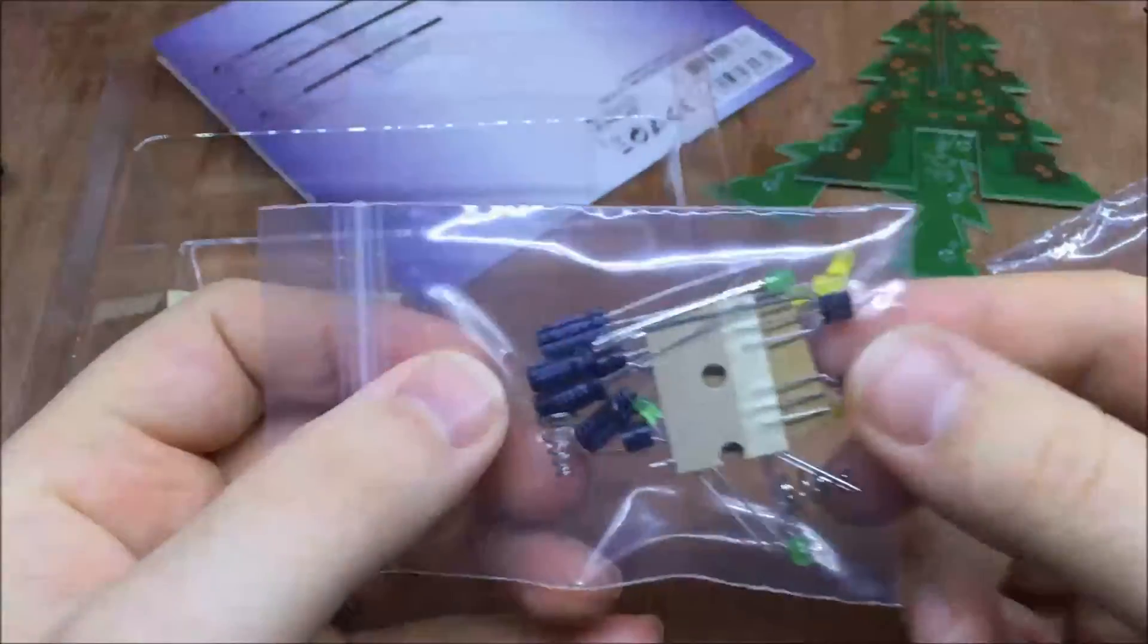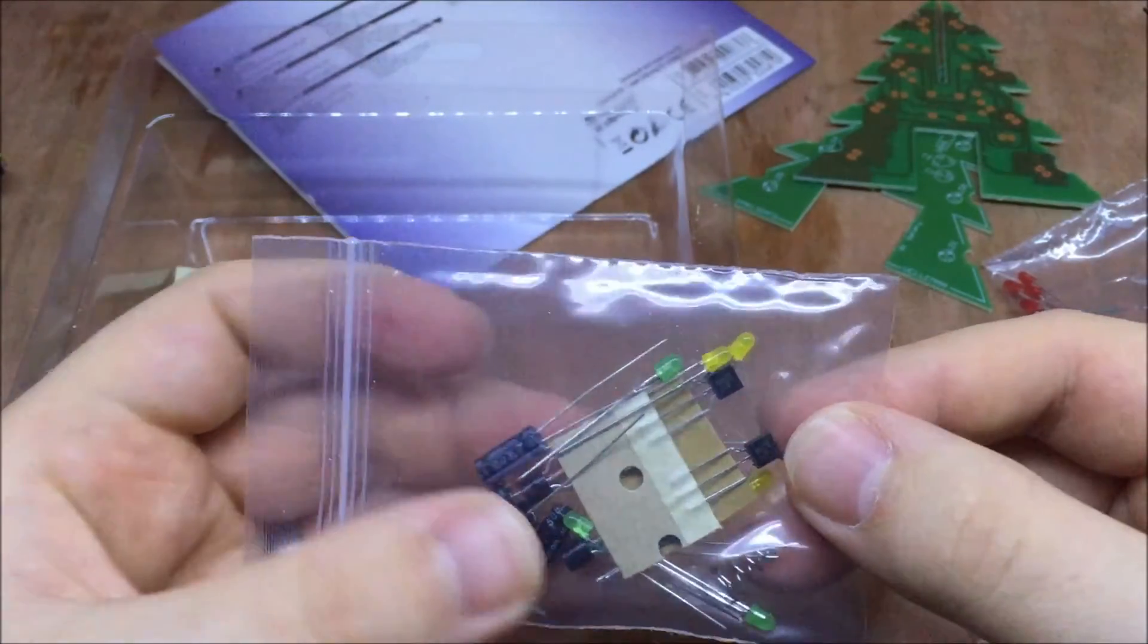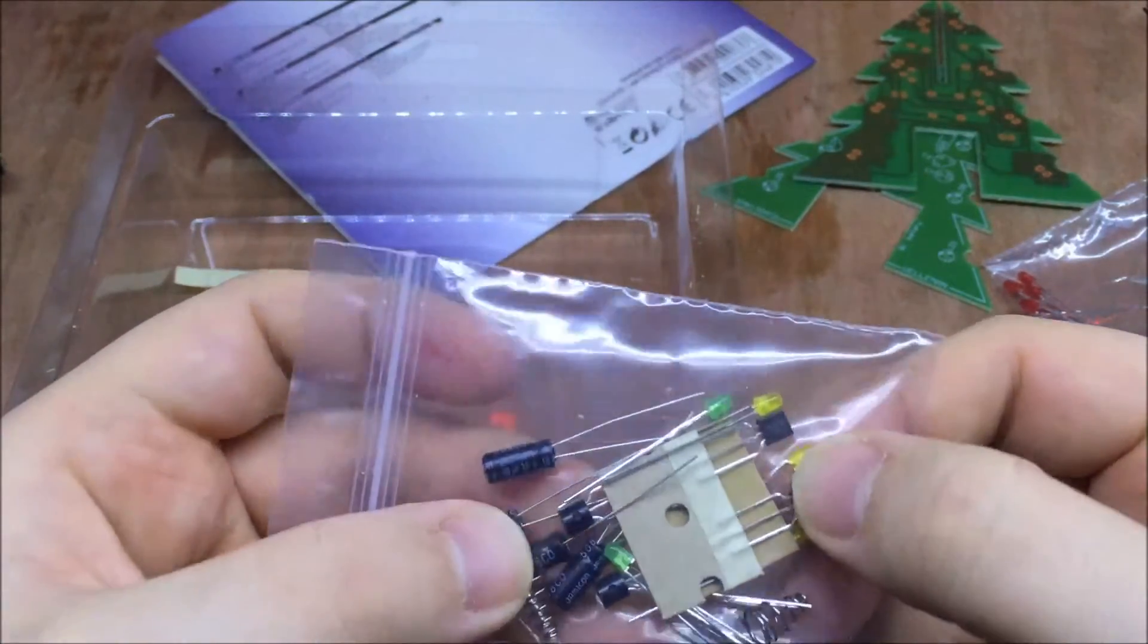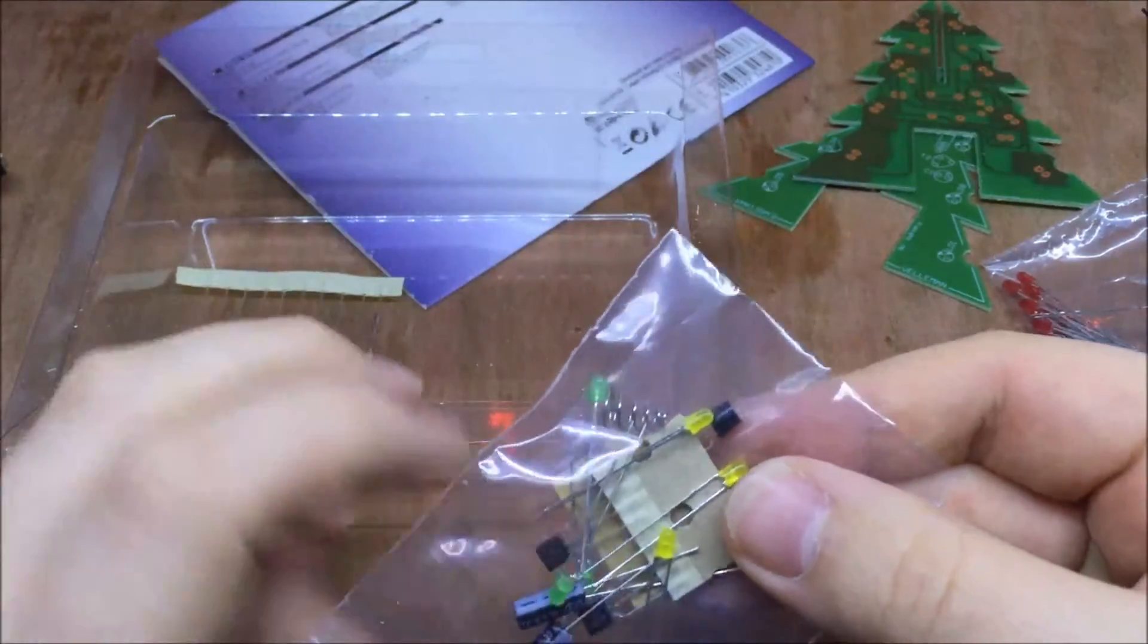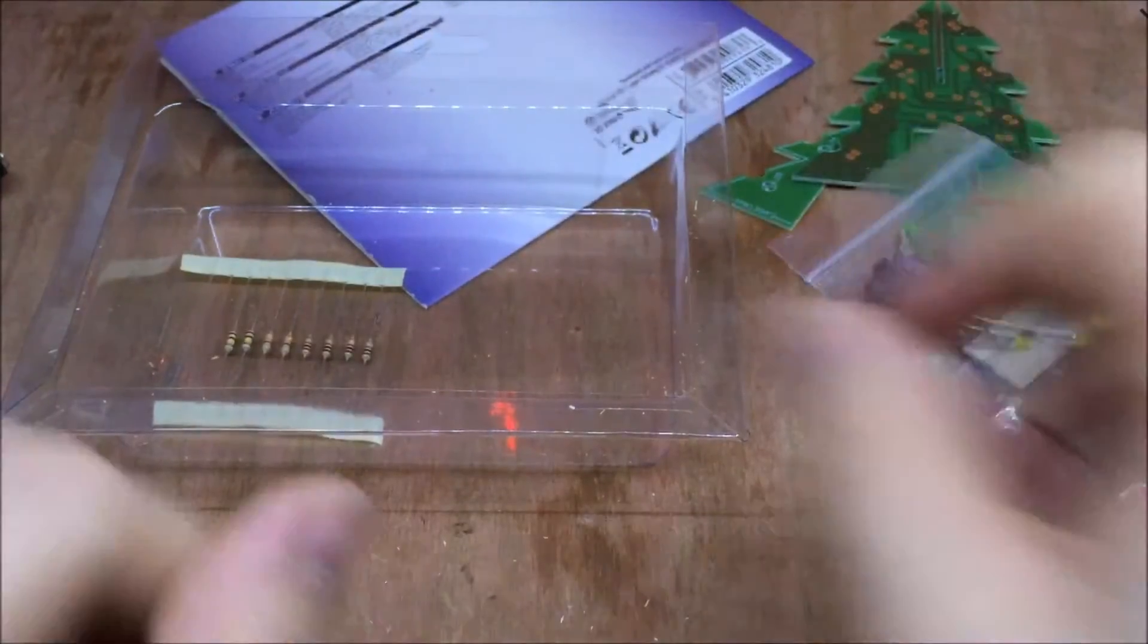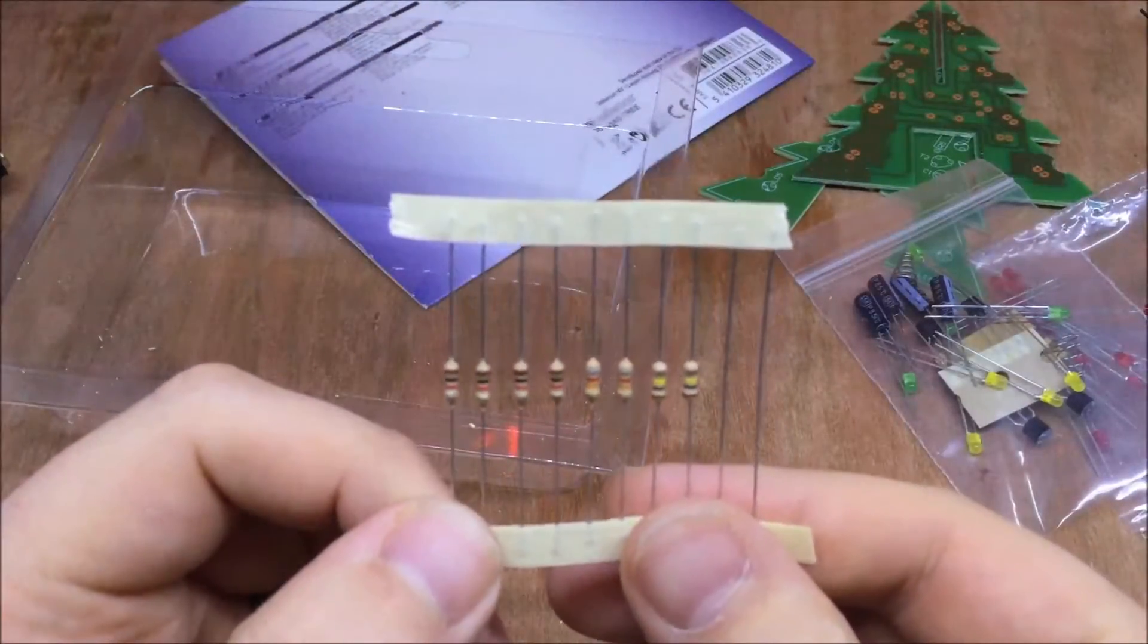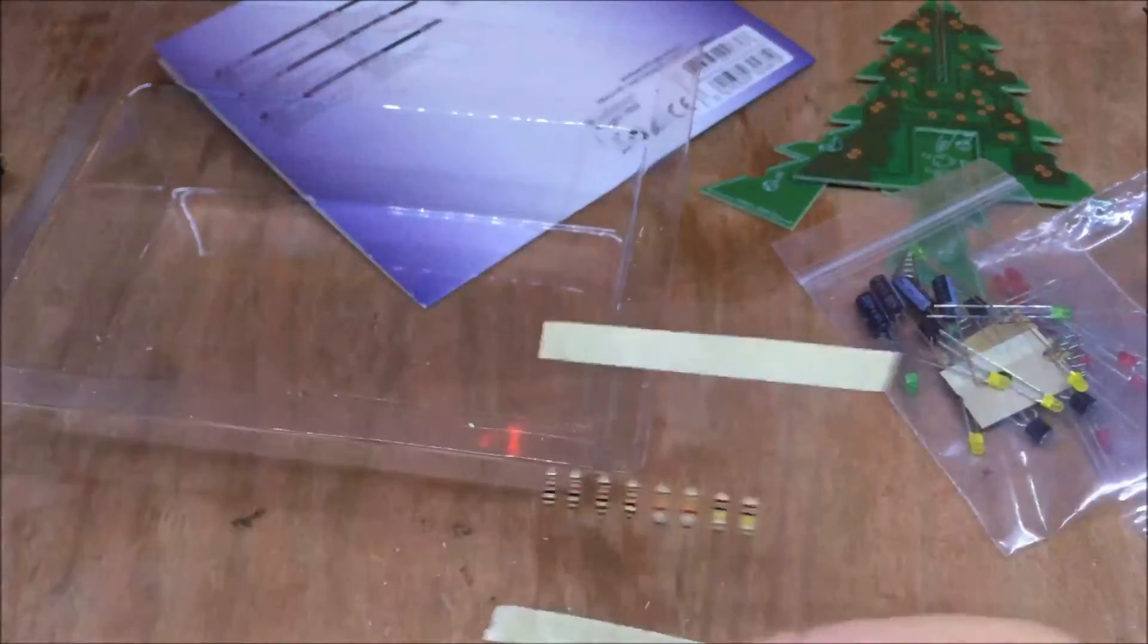A bag of other bits - we've got some capacitors, a couple of transistors, four transistors, some yellow LEDs and some green LEDs and a bunch of resistors and some bits of wire.